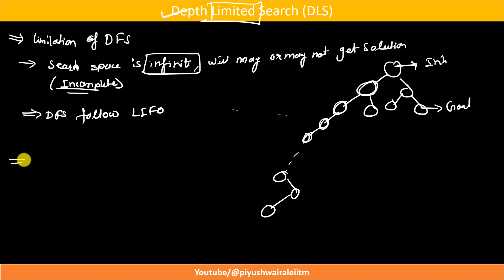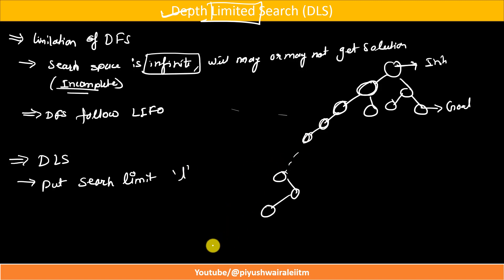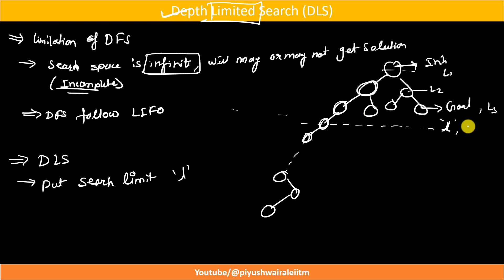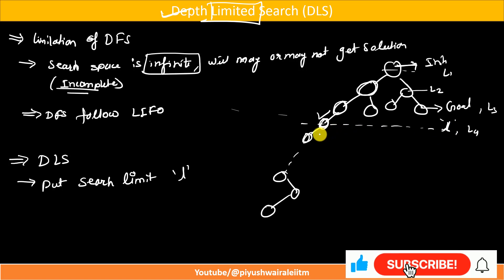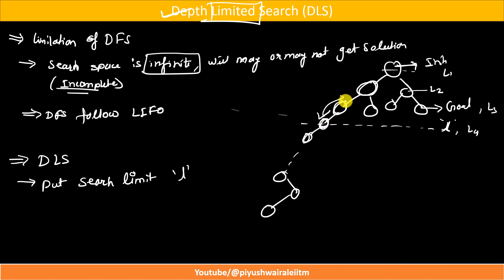In DLS — Depth Limited Search — we put a search limit in our algorithm, say limit L. Suppose we have infinite search space, we restrict the search algorithm to a particular limit L. So level 1, level 2, level 3, and level 4 — that is L equals 4. DFS follows LIFO and will come to this particular node but will not go beyond limit L. It will backtrack to the previous node, explore all nodes this way, and find the required goal state.